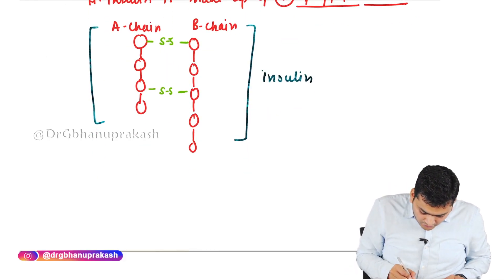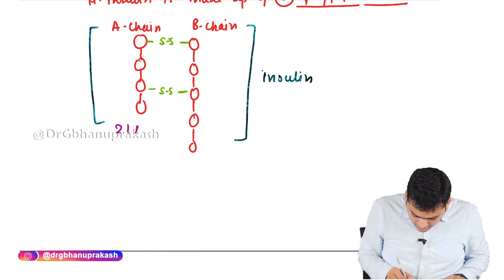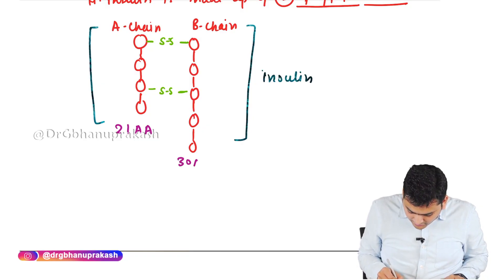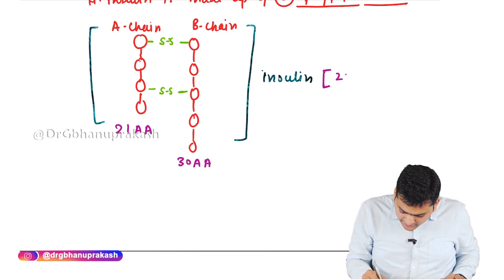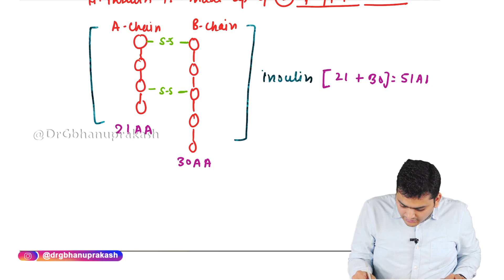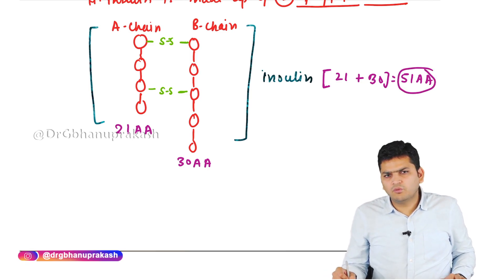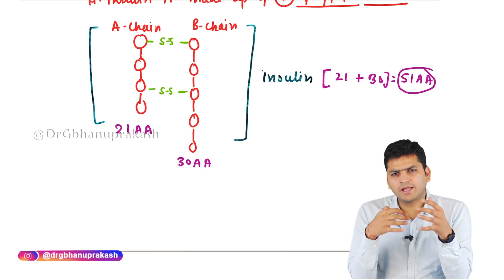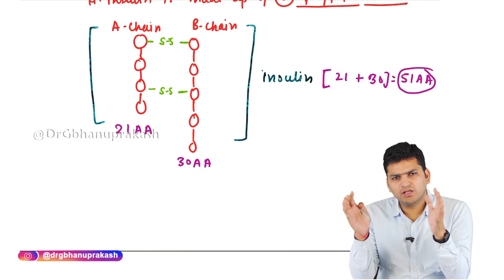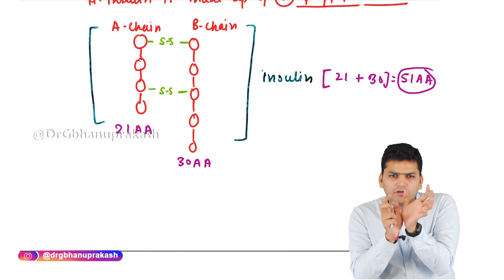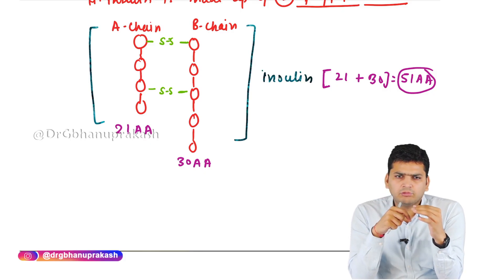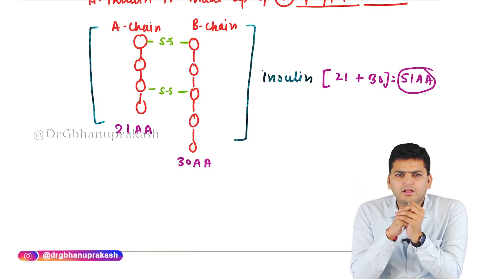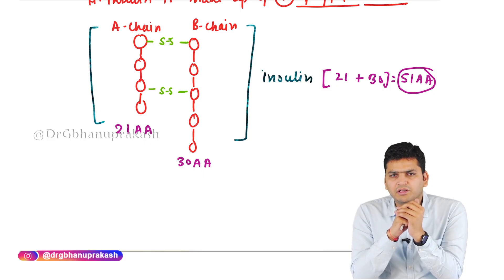The A chain consists of 21 amino acids, while the B chain consists of 30 amino acids. So human insulin is made up of 51 amino acids in total. The two polypeptide chains A and B are held together by disulfide bonds, forming human insulin.